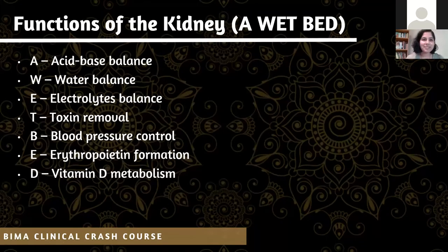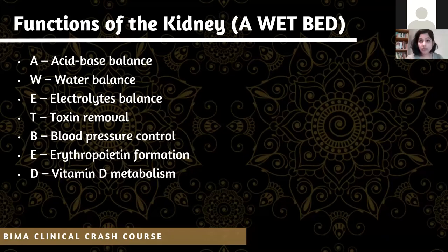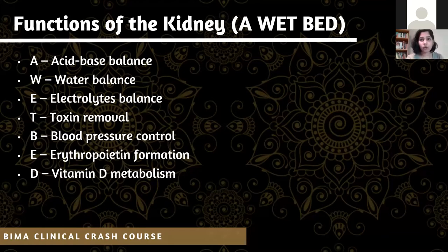The functions of the kidneys can be broken down into the acronym 'A WET BED': acid-base balance, water balance, electrolyte balance, removal of toxins, blood pressure control, erythropoietin formation — which plays an integral role in red blood cell formation — and vitamin D metabolism, so that vitamin D can be used in various parts of the body.